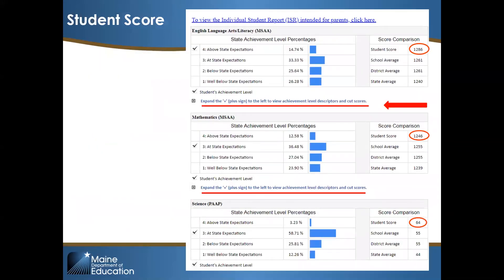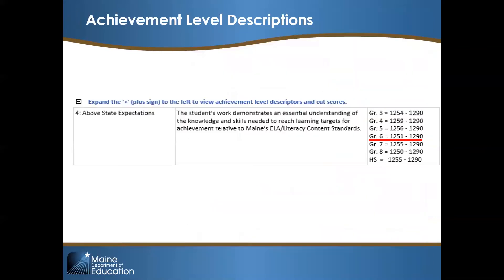Here is a comprehensive view of the student that scored 1286 in ELA. The other two content areas — math and science — are much lower. Each content area has its own achievement levels. Be sure to click on the 'expand to view achievement levels' link to find grade-level ranges. The range for a student to achieve in the above state expectations in sixth grade is 1251 to 1290. This student scored 1286 in ELA but only 1246 in math — very close to the top, but the student did not score in the above state expectations in math and science. You may want to review this student's file.